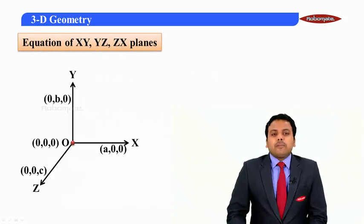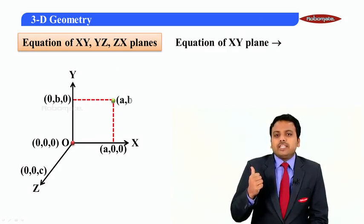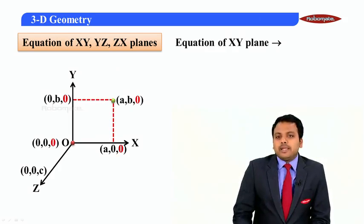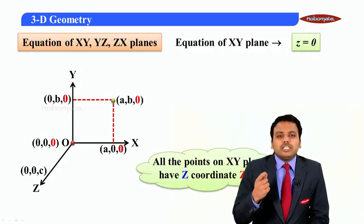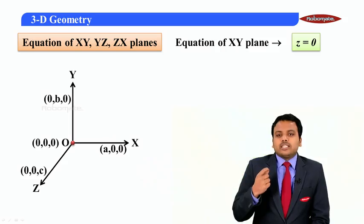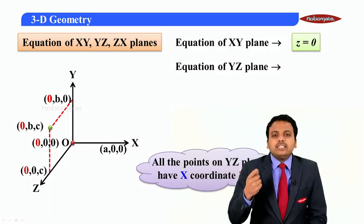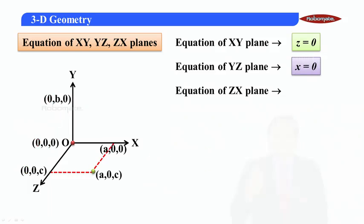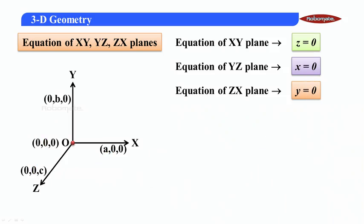Now let us look at the equations of the planes. All the points on the xy-plane have z-coordinate equal to 0, so the equation of the xy-plane is z = 0. All points on the yz-plane have x-coordinate equal to 0, so the equation of the yz-plane is x = 0. Similarly, all points on the xz-plane have y-coordinate equal to 0, so the equation of the xz-plane is y = 0.